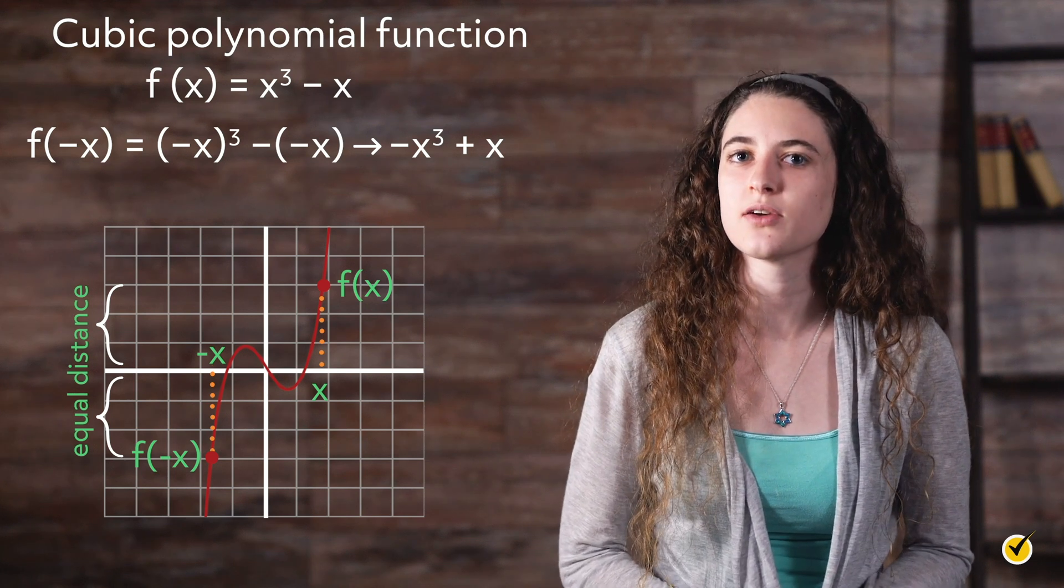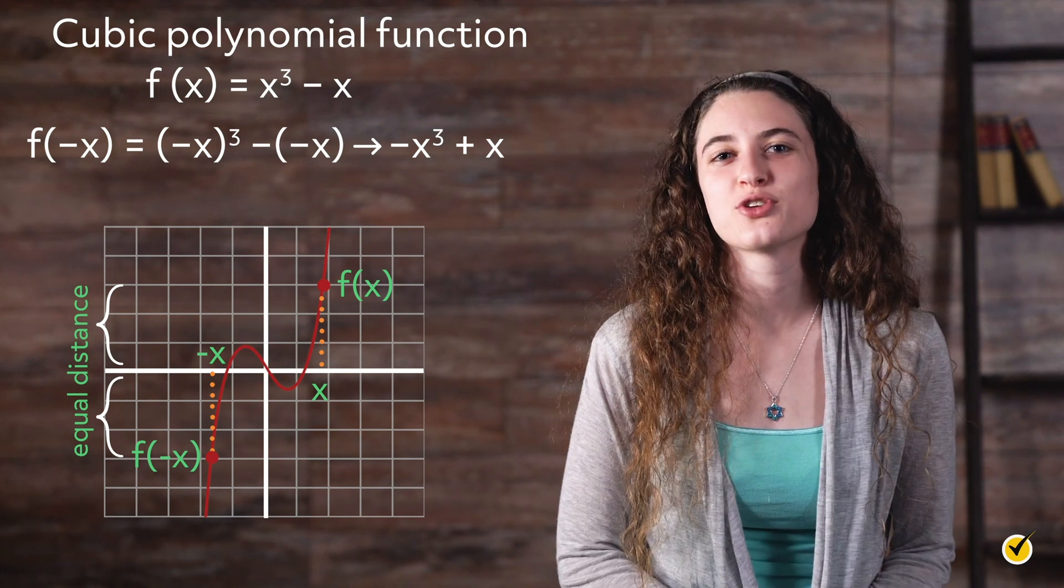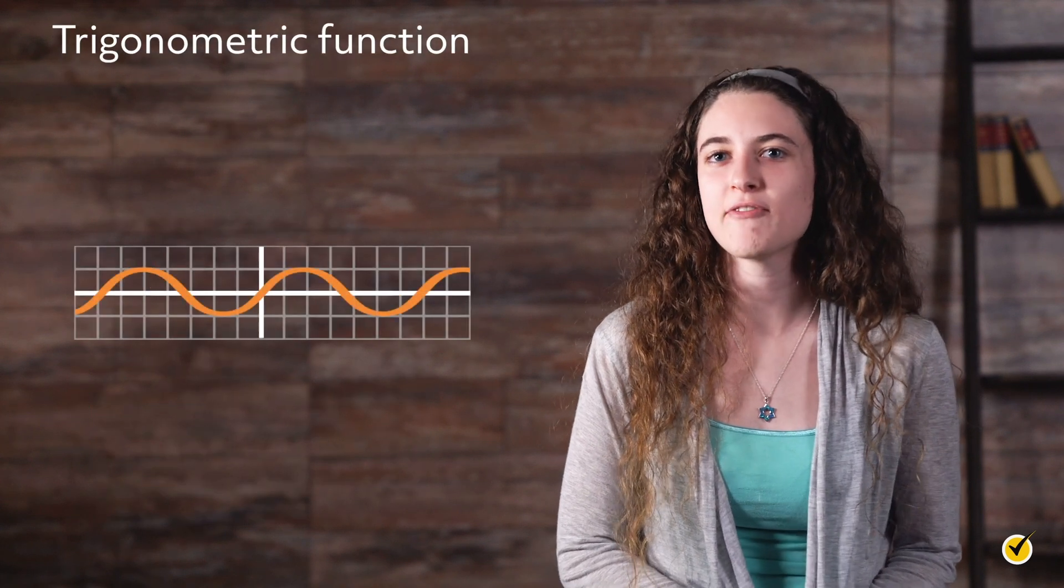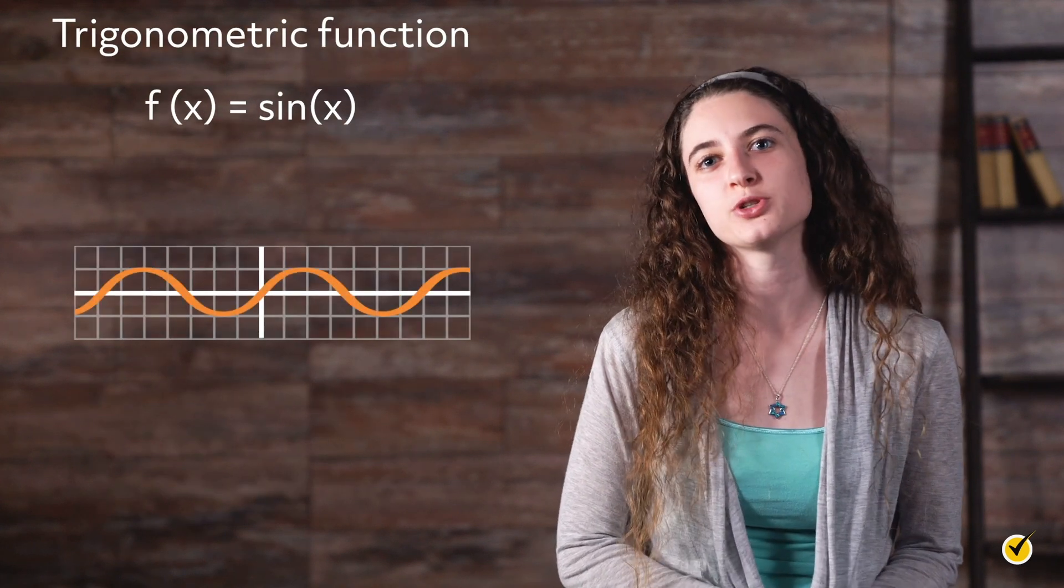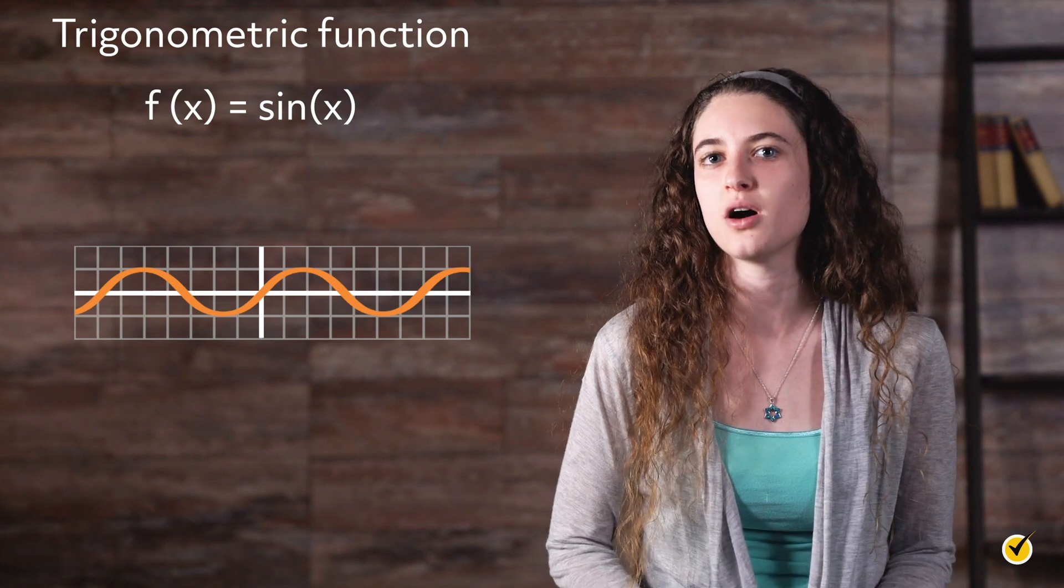A quick look at the graph of the trigonometric function f of x equals sine x shows symmetry about the origin, indicating that it is also odd.